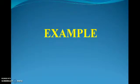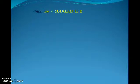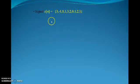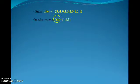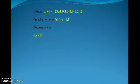Now we will see a simple example of how the overlap save method is actually done. My signal x(n) is taken as x(n) = {3, -1, 0, 1, 3, 2, 0, 1, 2, 1}, having a length of 10, so Ls = 10. The impulse response h(n) = {1, 1, 1}, so the length of the impulse response M = 3. From the question we understand Ls = 10 and M = 3.